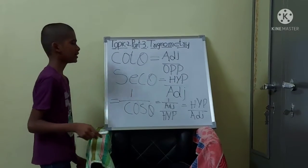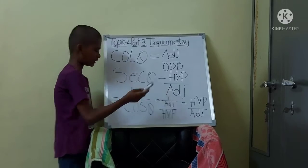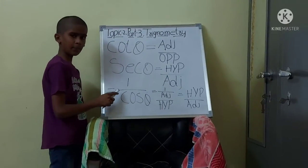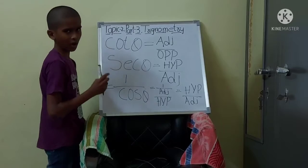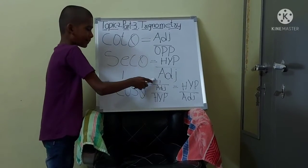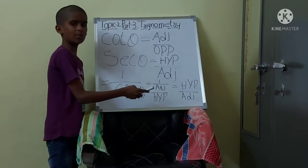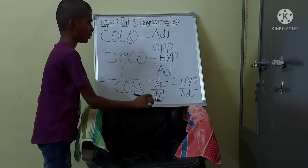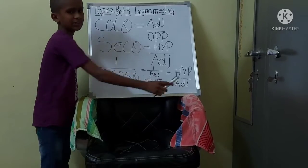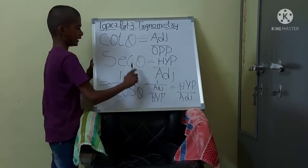Now we will see about secant theta. Secant theta equals hypotenuse by adjacent. This is also written as 1 divided by cos theta, because cos theta is adjacent by hypotenuse. Taking the reciprocal of that gives hypotenuse by adjacent, which is secant theta.